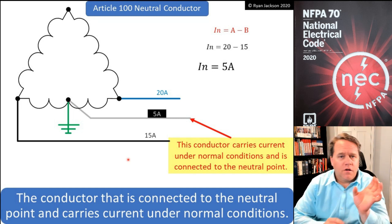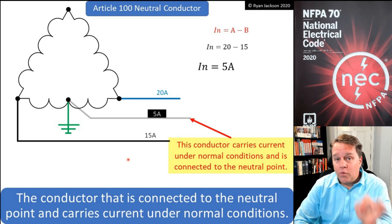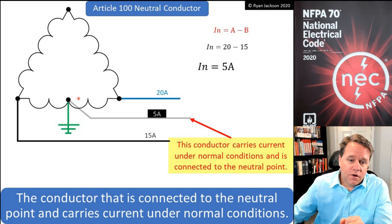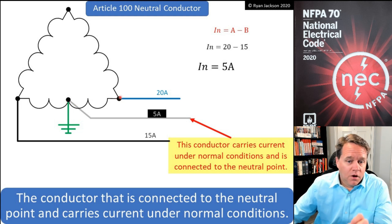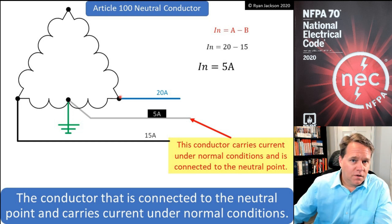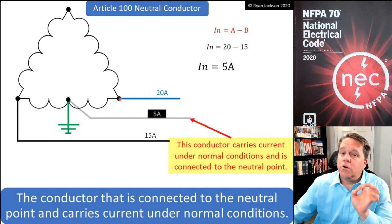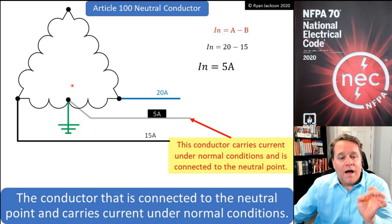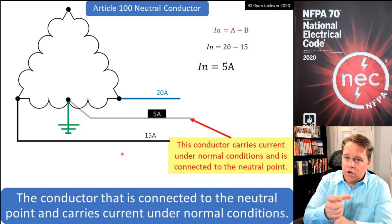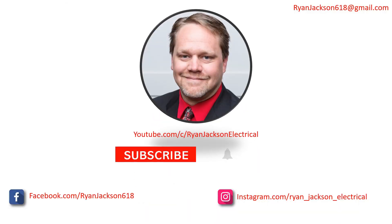What if I had a three-phase three-wire delta connected system? That would be a corner-grounded system. If I shift the grounded point over to a corner of the delta, that conductor would carry current under normal conditions, but it's not connected to a neutral point — because on a delta, a neutral point can only exist at the center of one of the phases. That's the difference between a neutral conductor and a grounded conductor.